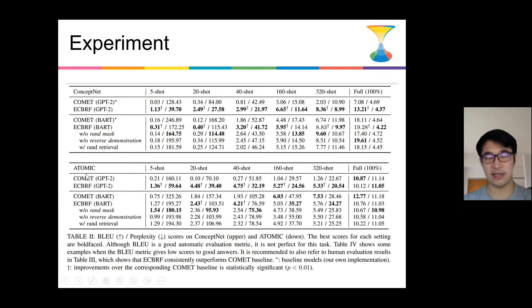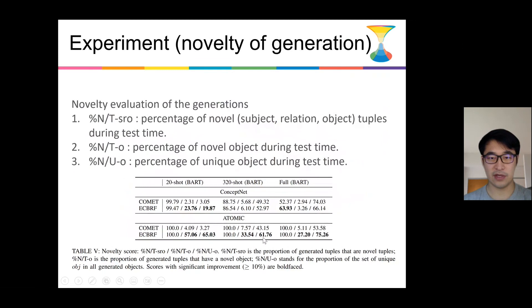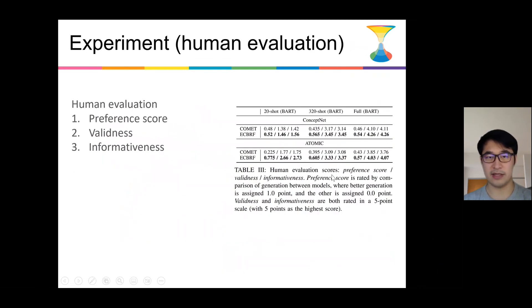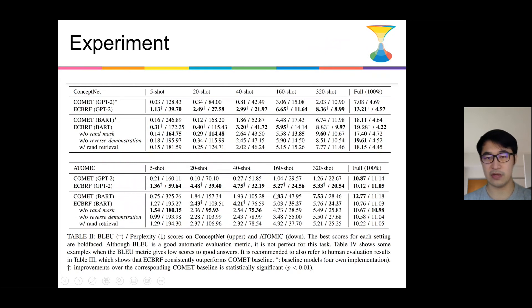It is also, you know, ATOMIC dataset and the train set is large. So actually this novelty result and the human evaluation result explain why here ECBRF receives lower BLEU score than COMET.